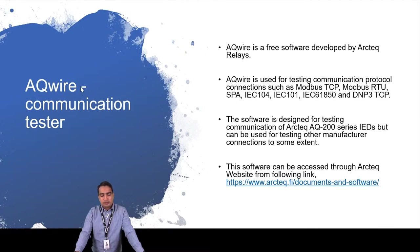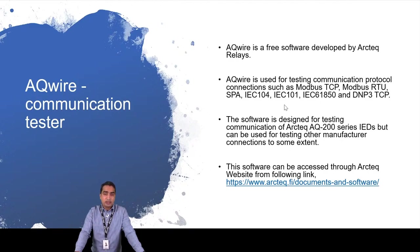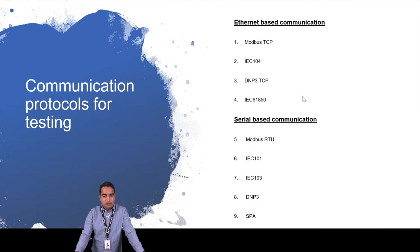What is AQWire communication testing software? This software is developed by ArcTech Relays and is used to test all the communication protocols available in the relay. It is designed to test the AQ200 and AQ250 series of ArcTech, and can also be used to test some other devices from other companies. This software is available on the ArcTech website — it's free to use and anyone can download it. Here we have the Ethernet-based and serial-based communication protocols defined.